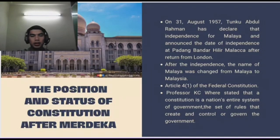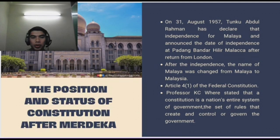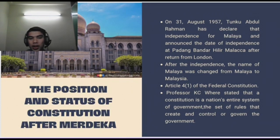Before going into detail regarding the position of the constitution after independence, we need to look at how the constitution was constructed. On 31 August 1957, the independence of Malaya was declared. For the Malaysian constitution, the Reid Commission, headed by Lord Reid, was set up to draw up the constitution. The commission met several times from June to October 1956, consulting the Malay rulers and the Alliance. The Federal Legislative Council accepted and approved the constitution on 15 August 1957, and it came into effect on 27 August 1957.